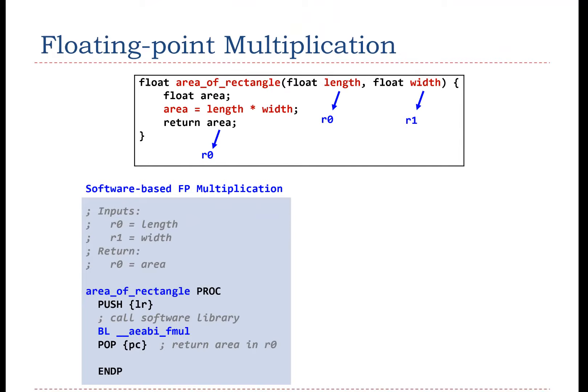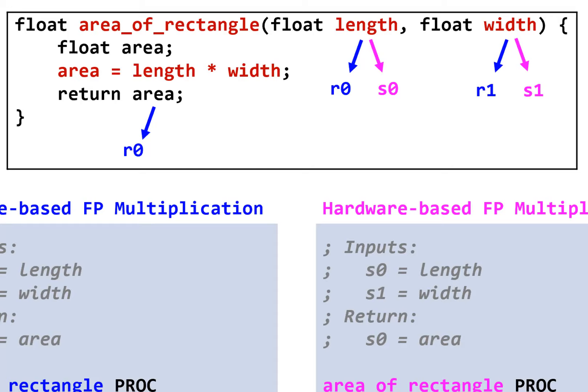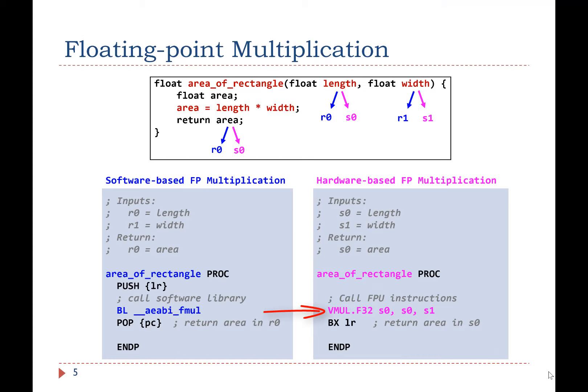However, if FPU is available, the compiled program will look like this. The floating point multiplication is directly performed by the FPU without using any software library. The input arguments are passed via the floating point registers S0 and S1, and the results are returned in S0. On Cortex-M4, FPU can take as fast as one clock cycle to perform a floating point multiplication, which is much faster than the multiplication function in the runtime software library.